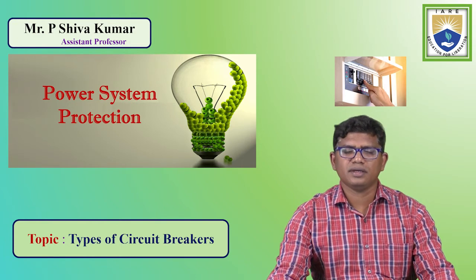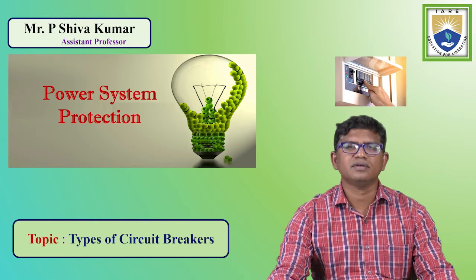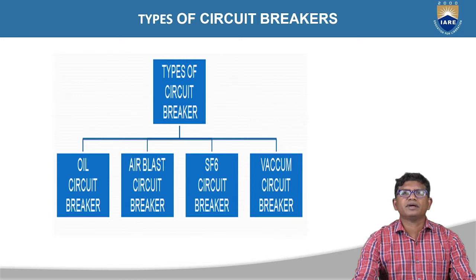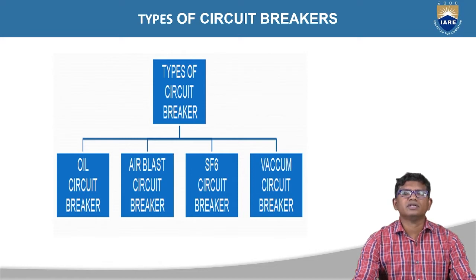Circuit breakers are classified into four types. Now we are going to discuss about the classifications of the circuit breaker. Based on the insulating fluid, circuit breakers are classified into: oil circuit breaker, air blast circuit breaker, SF6 circuit breaker, and vacuum circuit breaker.